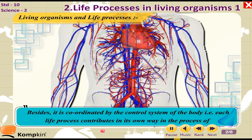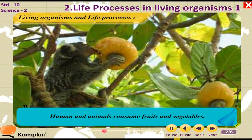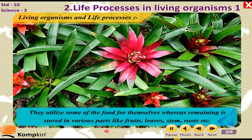Each life process contributes in its own way to the process of energy production. Humans and animals consume fruits and vegetables. Plants are autotrophs — they prepare their own food and utilize some of it for themselves.